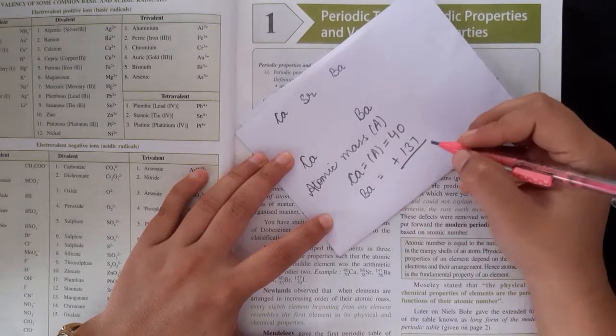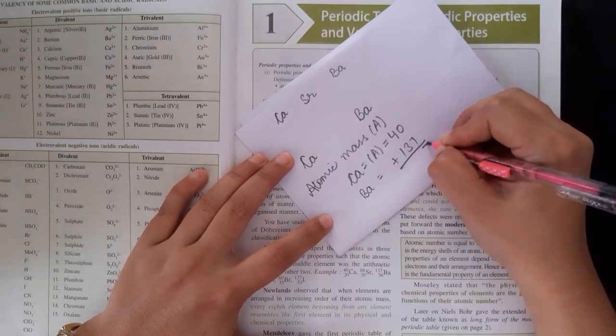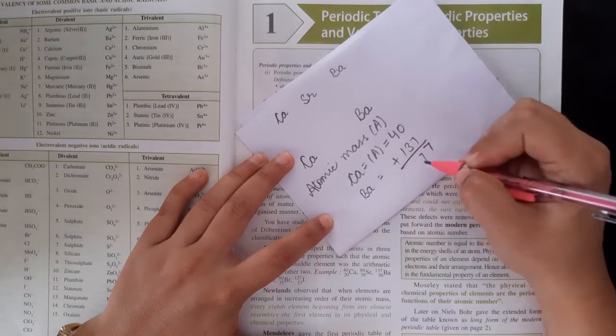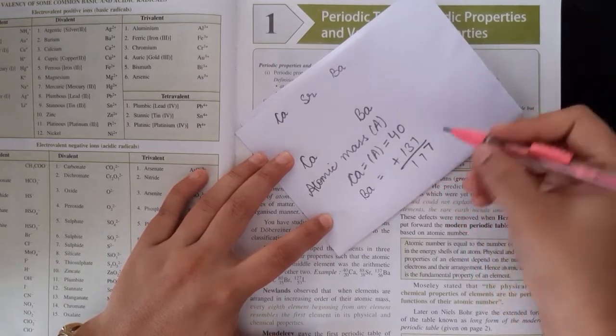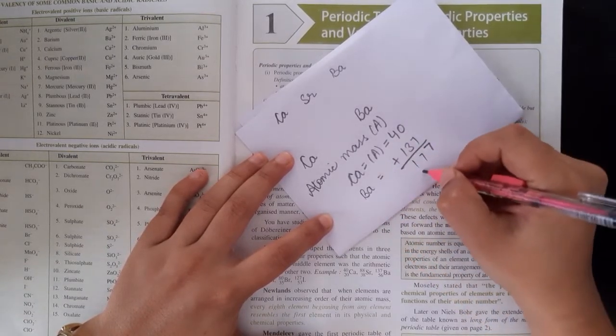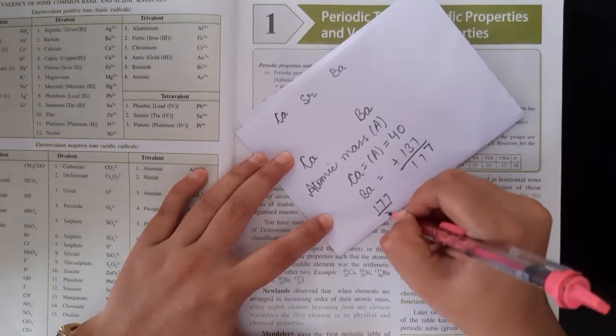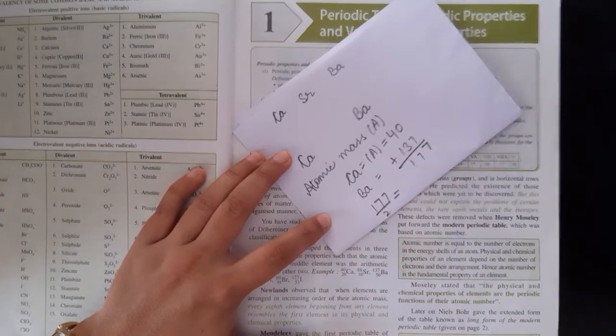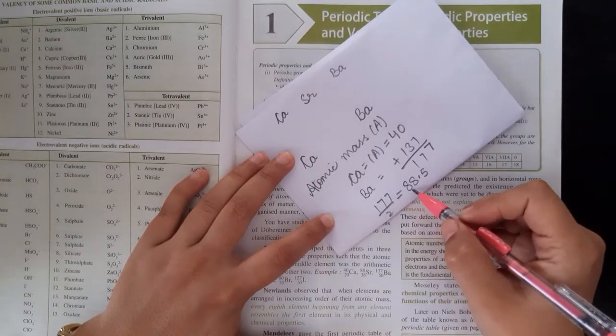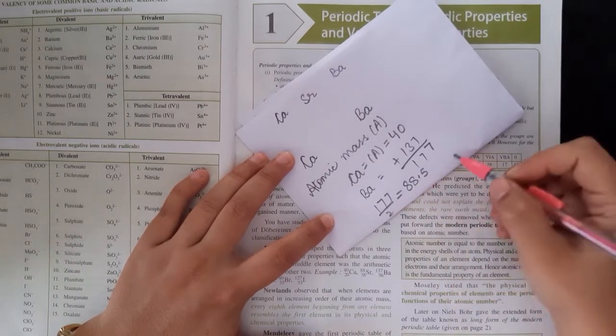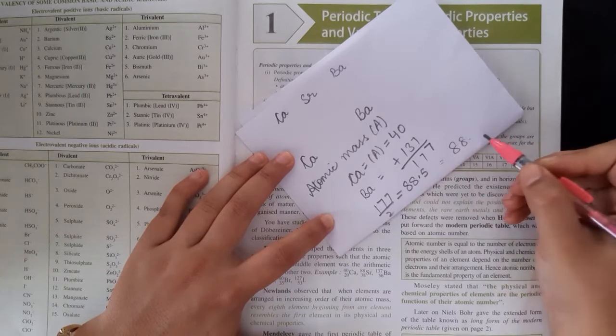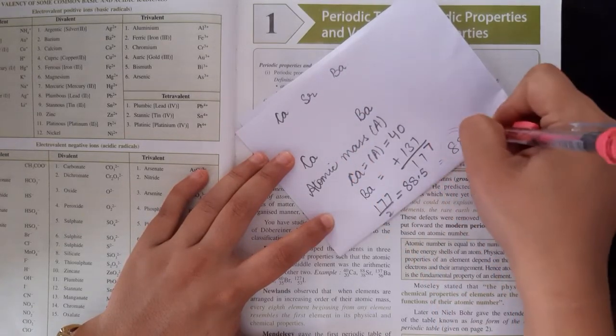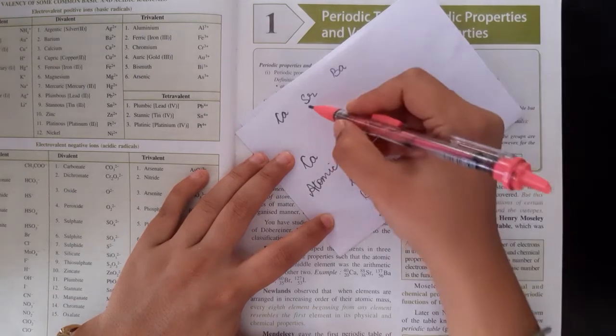137. Arithmetic mean - both were added and divided by 2. In arithmetic mean, we took both: 177 divided by 2. The answer is 88.5 means 88. Now what is the mass? He found the element with the mass 88. That is Sr.